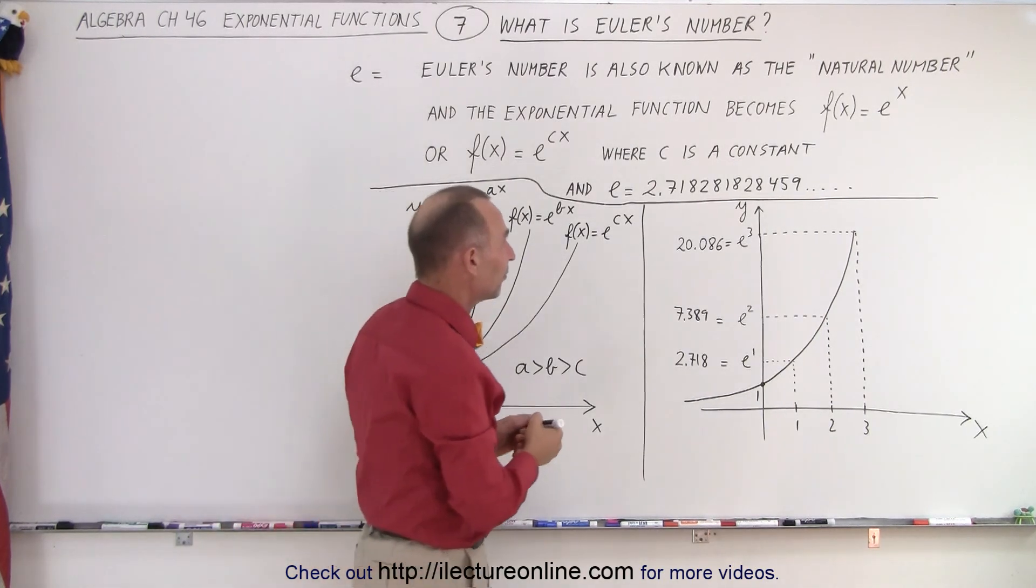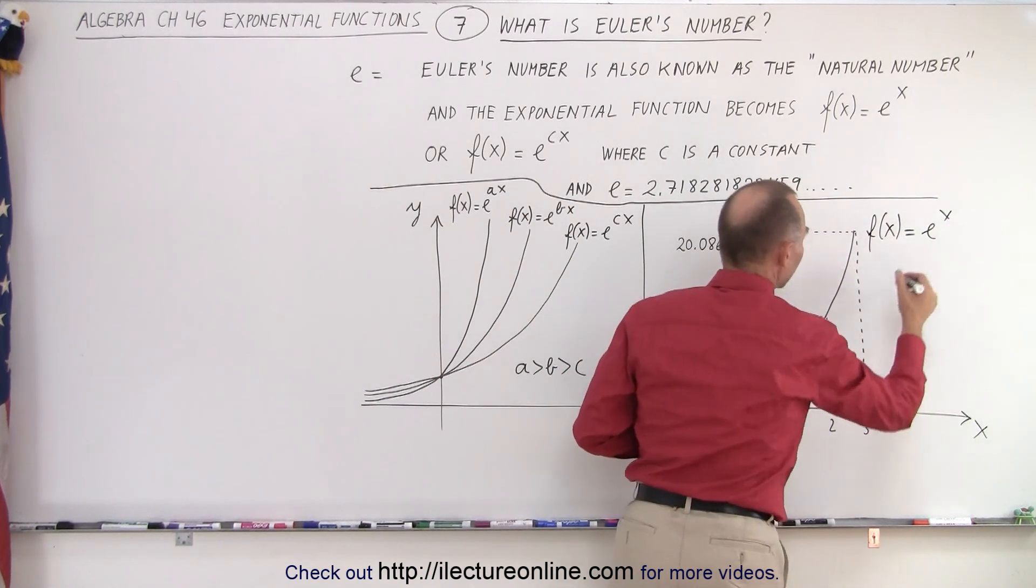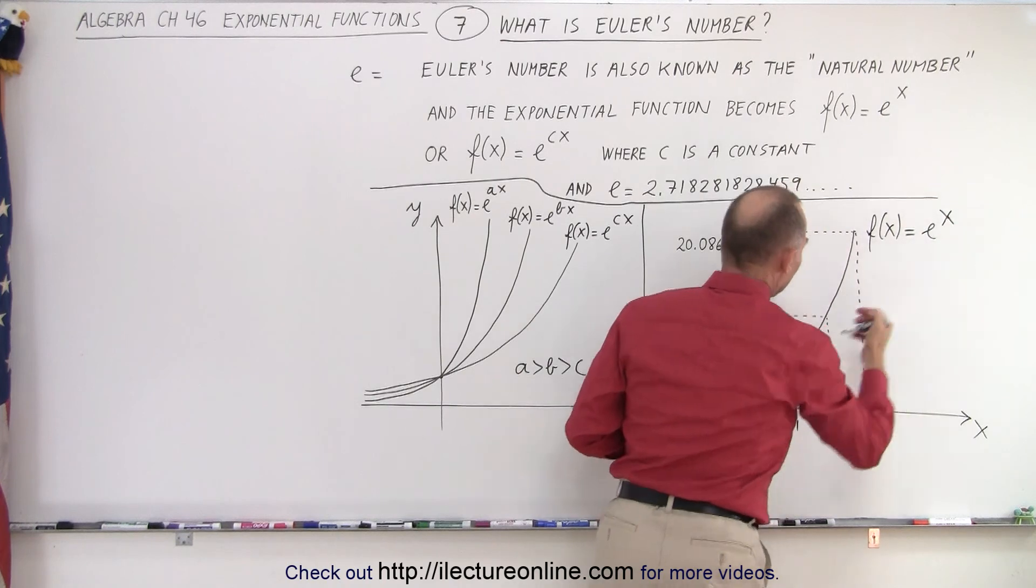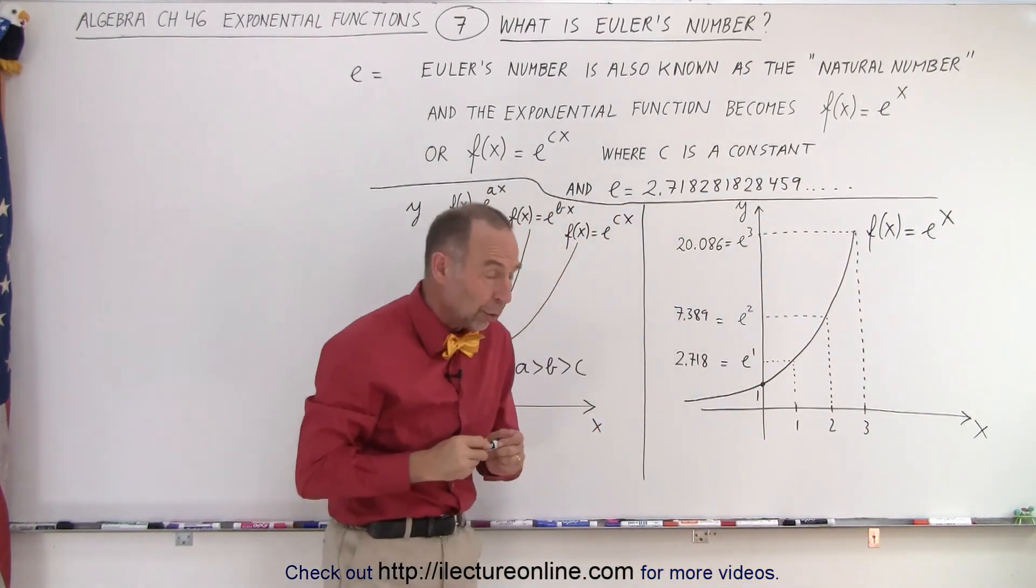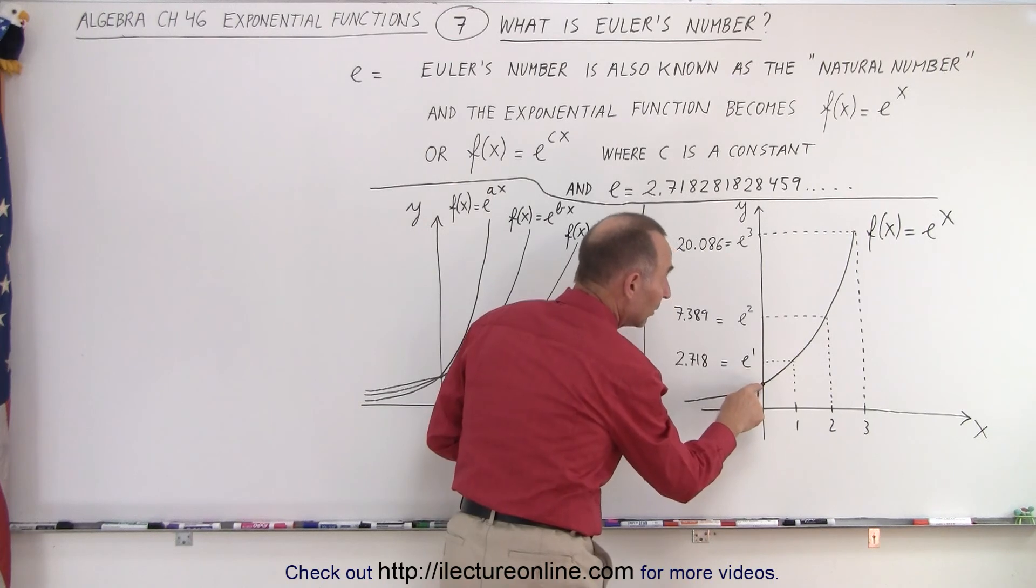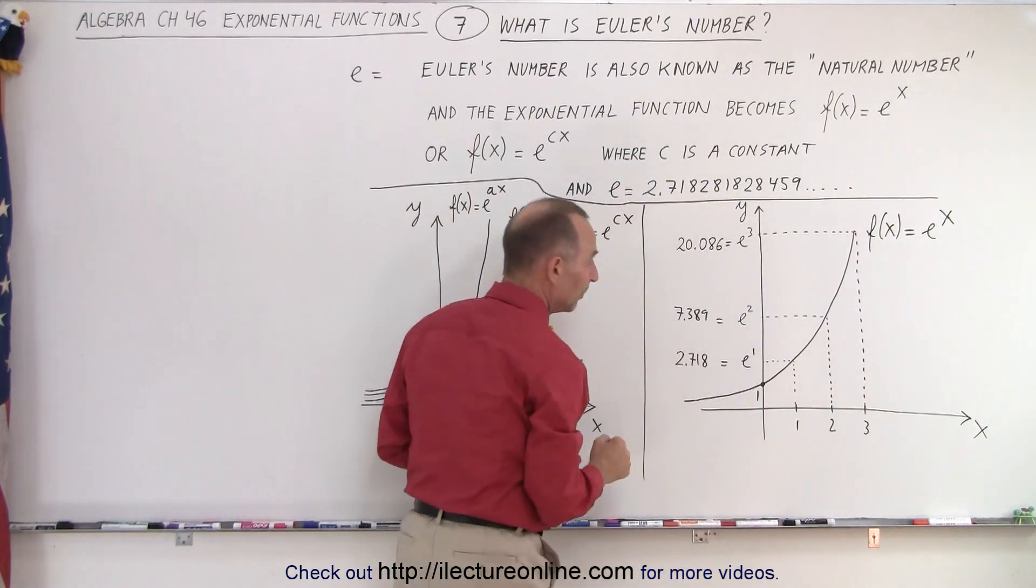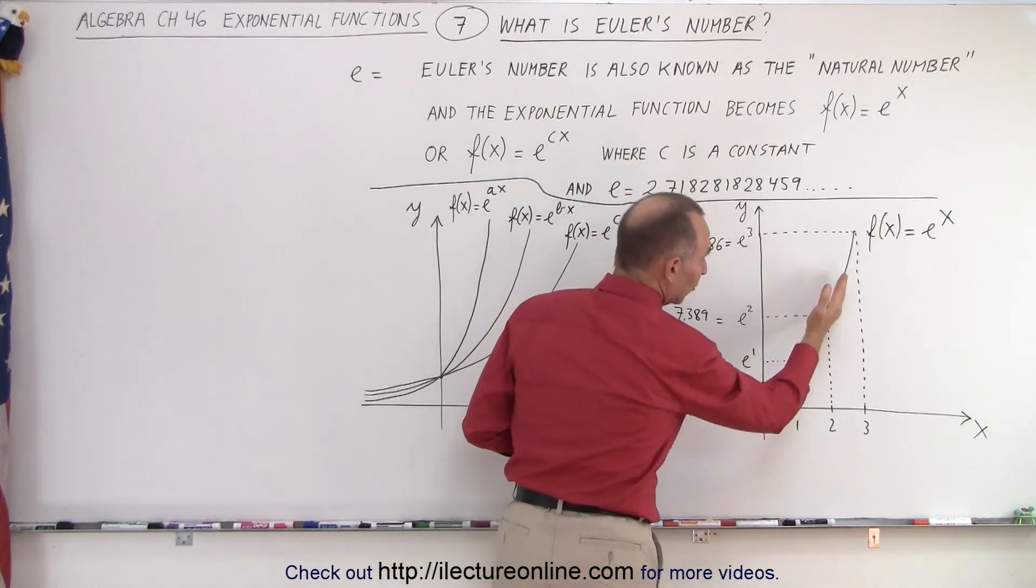Now, if you write the function f of x equals E to the x, it looks kind of like this. Now, notice that the function will cross the y-axis at y equals 1. Because when x equals 0, E to the 0 is going to be equal to 1. And then, of course, you can see the exponential increase.